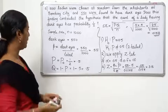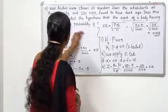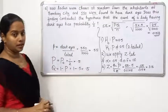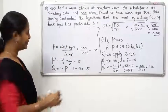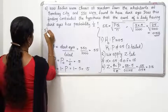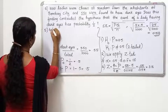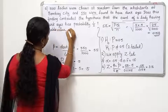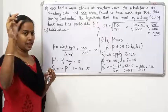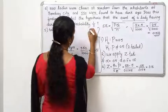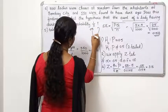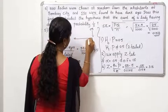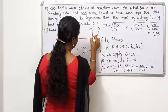In the fifth step, we write the table value according to the given level of significance and degree of freedom. The level of significance alpha is 0.05 and the degree of freedom is infinity.